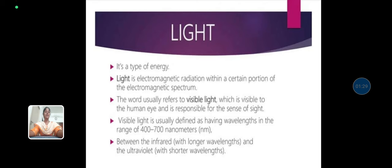Visible light is usually defined as having wavelengths in the range of 400 to 700 nanometers, between the infrared with longer wavelengths and the ultraviolet with shorter wavelengths.